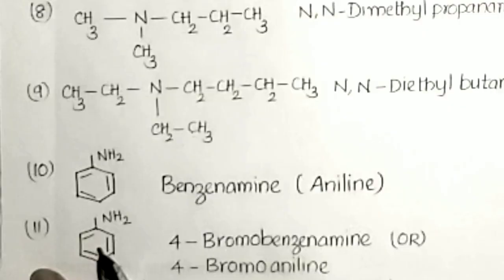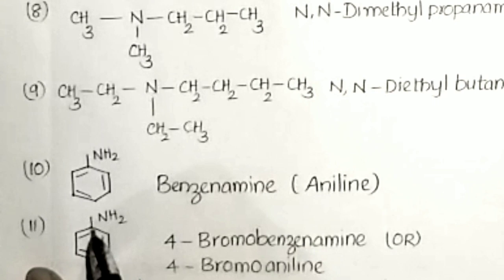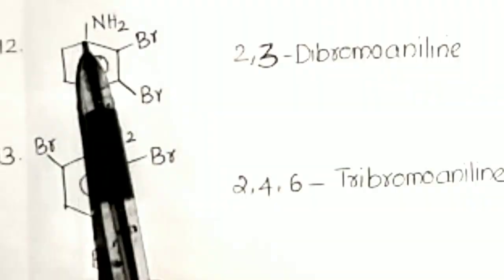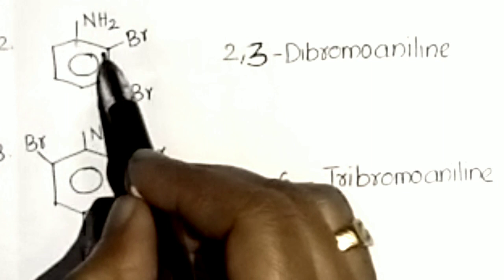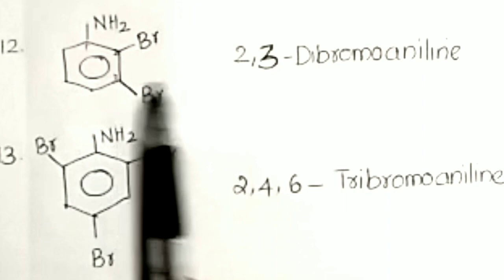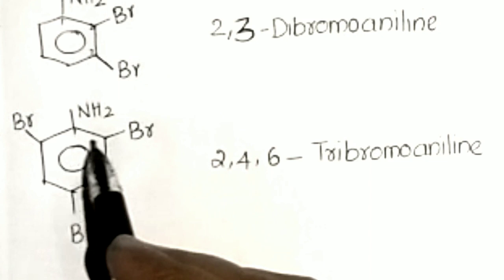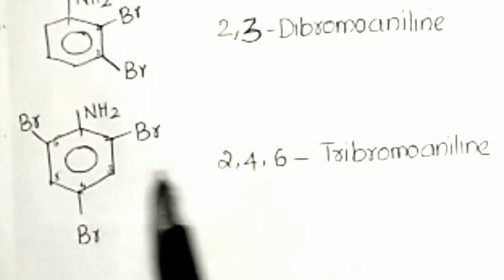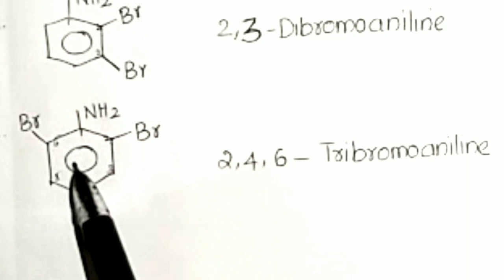In aniline, carbon atoms are numbered 1, 2, 3, 4. A bromine at position 4 gives 4-bromoaniline. For two bromine atoms at positions 2 and 3: 2,3-dibromoaniline. Numbering 1 through 6 around the ring, three bromine atoms at positions 2, 4, and 6 give 2,4,6-tribromoaniline.